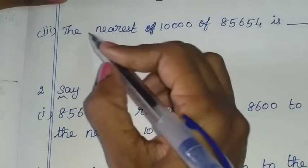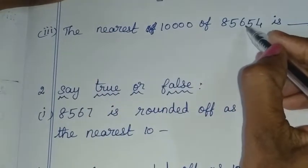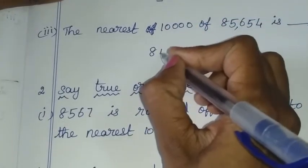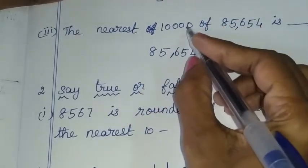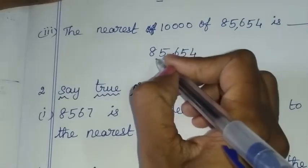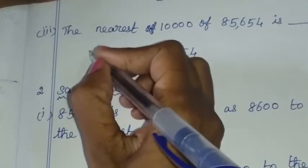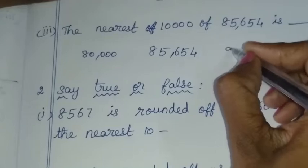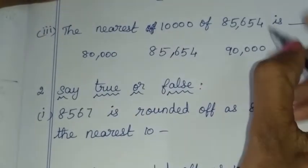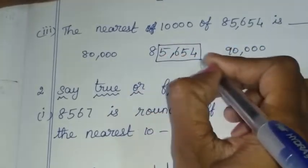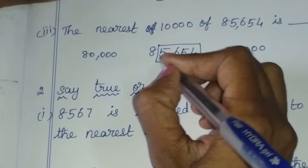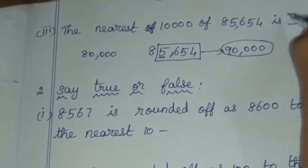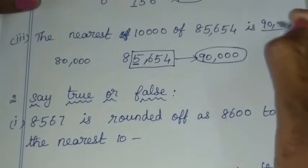Now, the nearest 10,000 of 85,654. The ten-thousands go: 80,000 and 90,000. Half of 10,000 is 5,000. We check the thousands digit: it is 5,654 — greater than 5,000. So we round up to 90,000. The answer is 90,000.